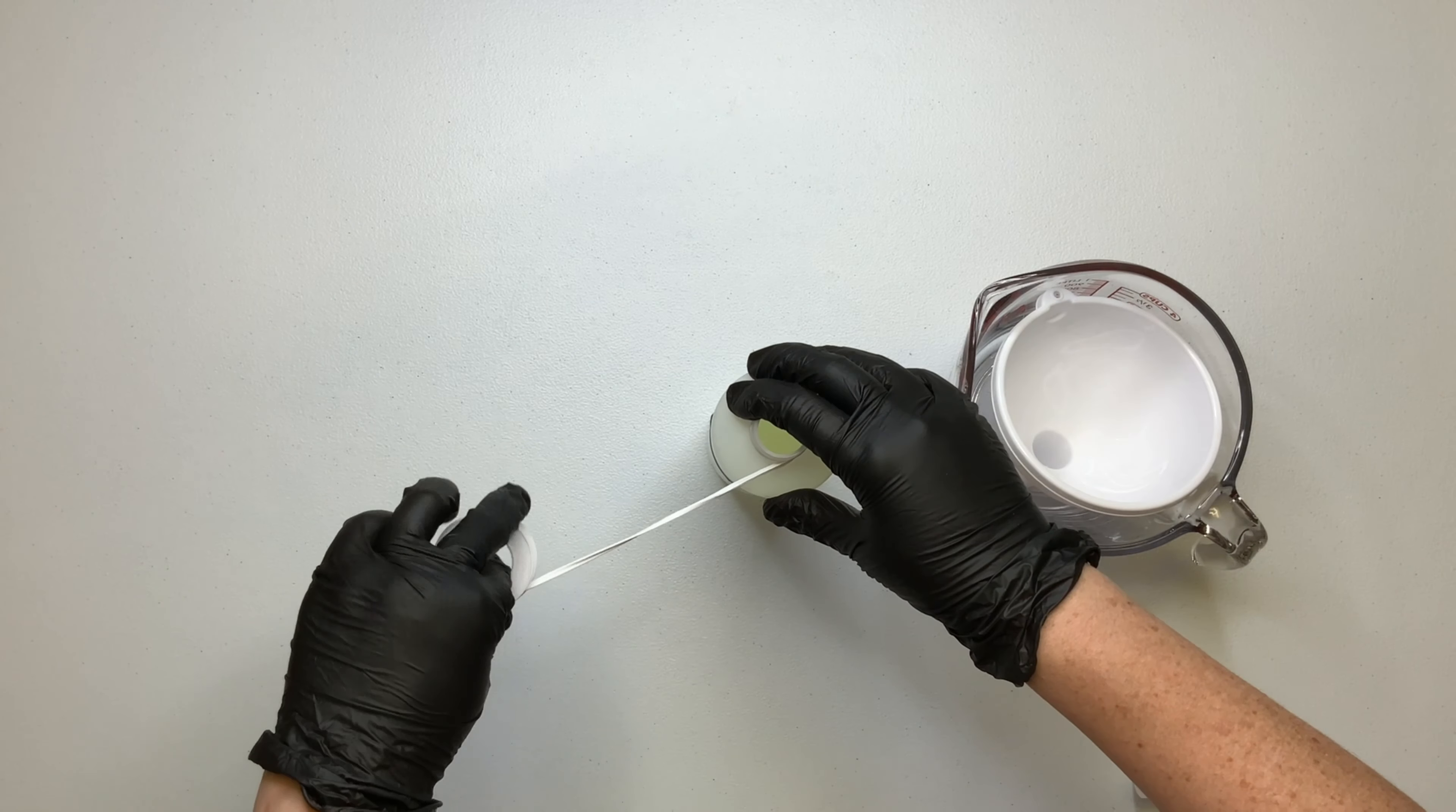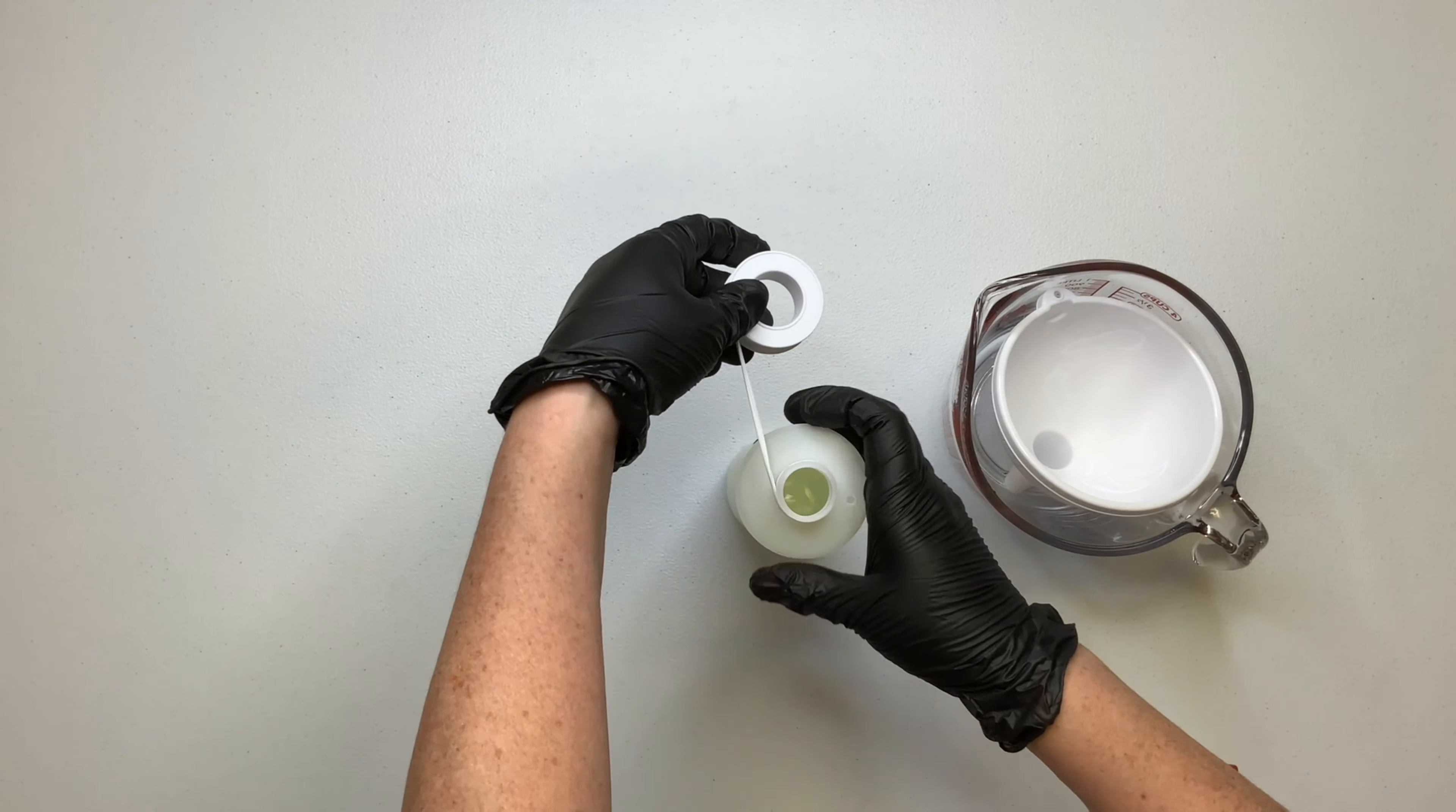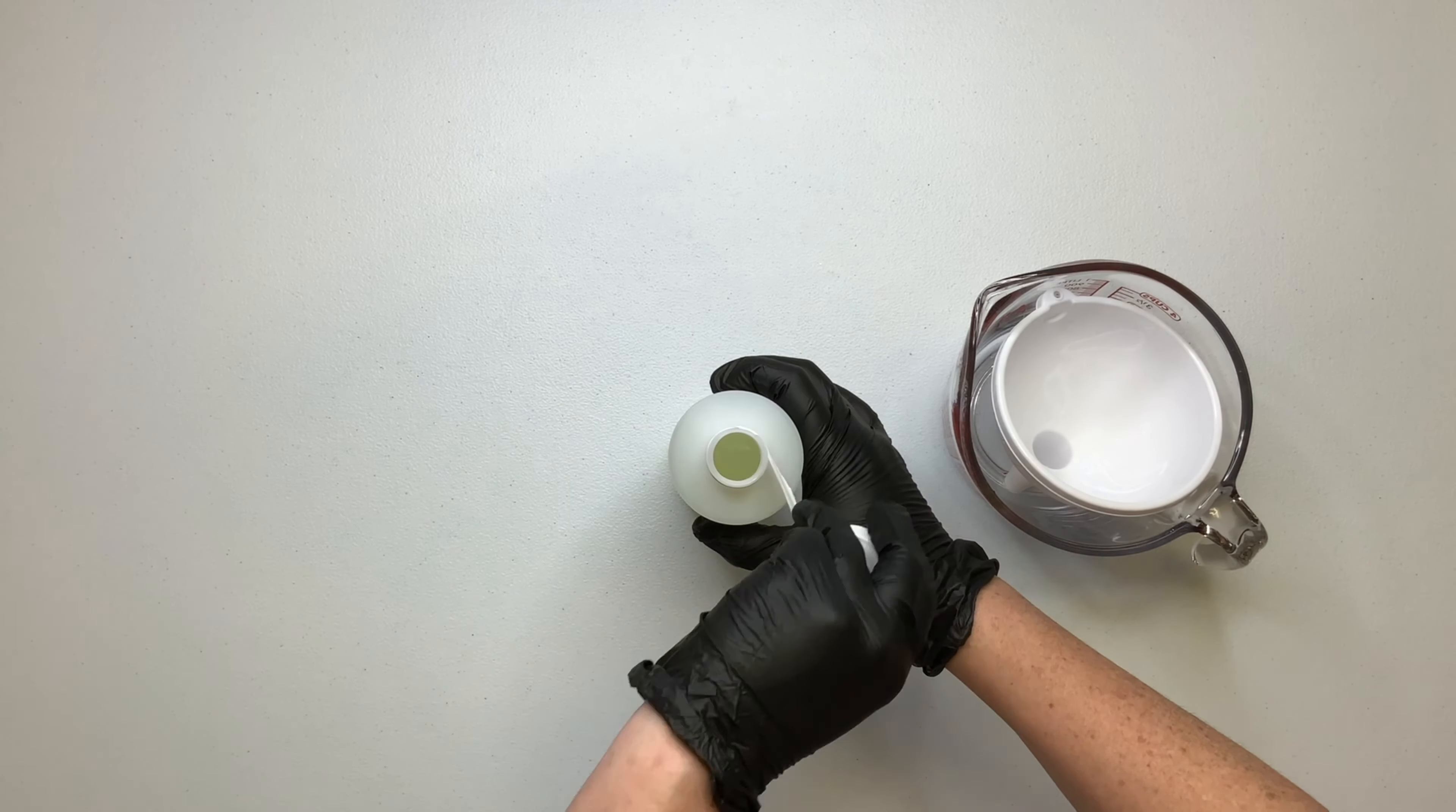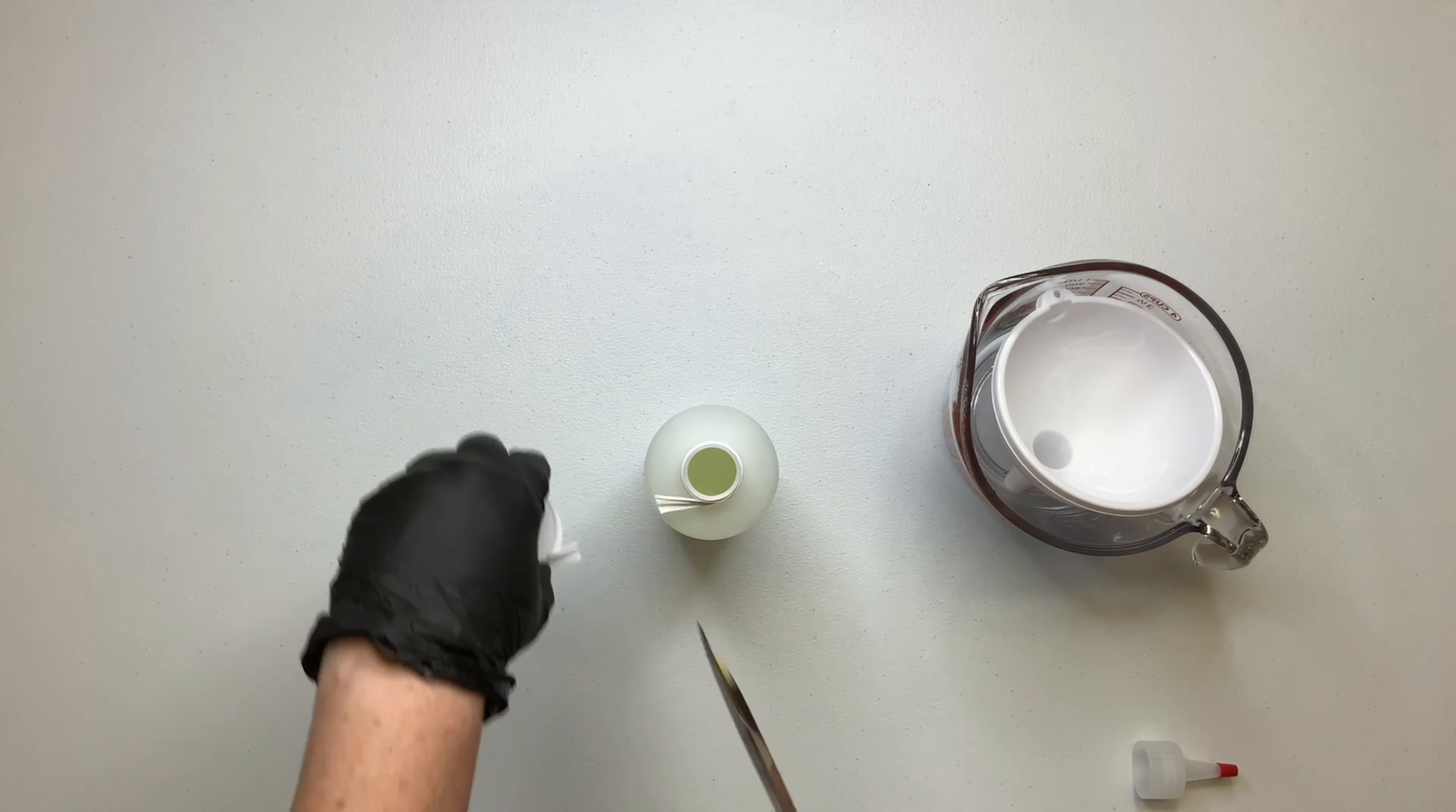For added precaution, I'm using plumber's tape to wrap around the opening of this bottle. Since I'm going to be doing several shirts, I just want to make sure that it's not going to leak and drip bleach anywhere where I don't want bleach to be.